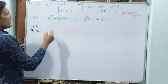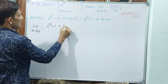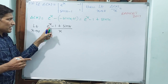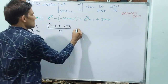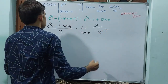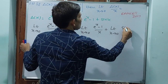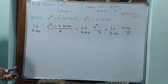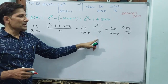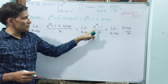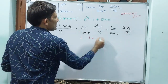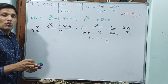Now applying the limit: limit x tends to 0 of delta x by x equals limit x tends to 0 of e power x minus 1 divided by x, plus limit x tends to 0 of sin x divided by x. We know that limit x tends to 0 of e power x minus 1 divided by x equals 1 (by standard formula), and limit x tends to 0 of sin x divided by x equals 1 (by the sandwich theorem). So the answer is 1 plus 1 equals 2.